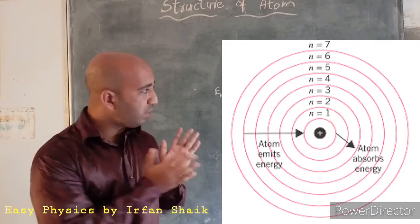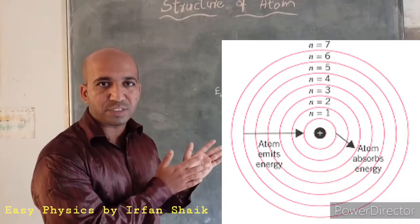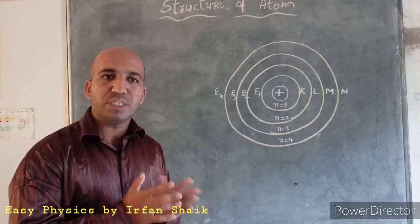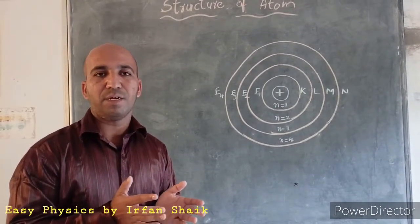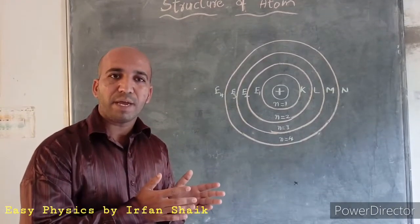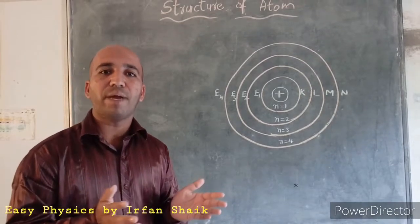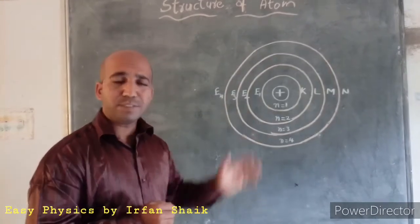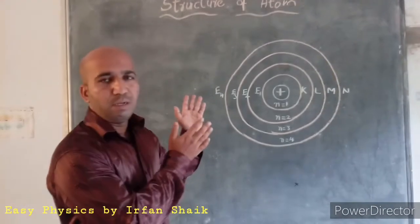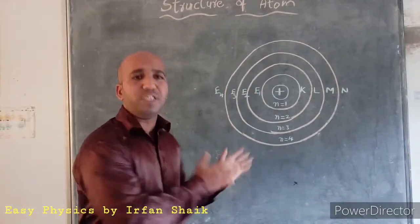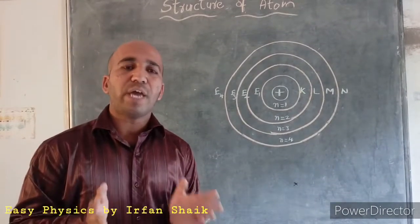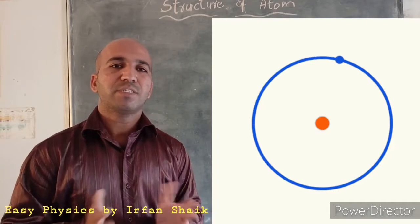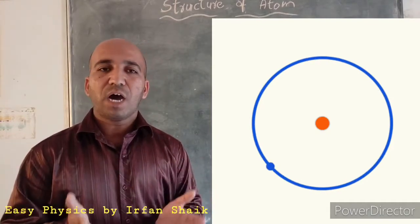The energy released by electrons while jumping from one shell to another is in the form of particles. This is explained by a concept derived by Max Planck, which will be discussed in another class. According to these postulates, Niels Bohr tried to explain the structure of the hydrogen atom, and he successfully did so.